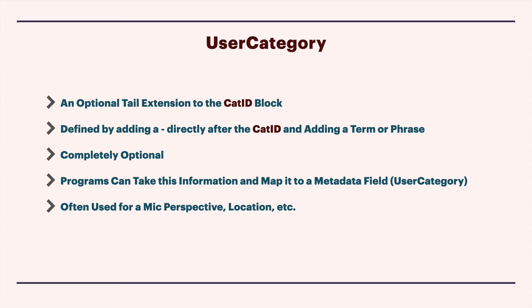The user category is basically an optional tail extension to the cat ID block. It's defined by adding a dash directly after the cat ID and before the underscore, and adding a term or phrase. So if I add dash INT, I'm now defining the user category as INT, which might stand for interior. It's not a requirement to use the user category - it's meant to give end users an extra level of organization that they can choose to use or not. Certain programs can take this information, because it's rigidly encoded into a specific place in the file name, and map it to a metadata field - in SoundMiner, a field actually defined as user category. It's often used for mic perspective, location, or some recurring phrase to organize a library, allowing the end user to define their own set of categories within this system.